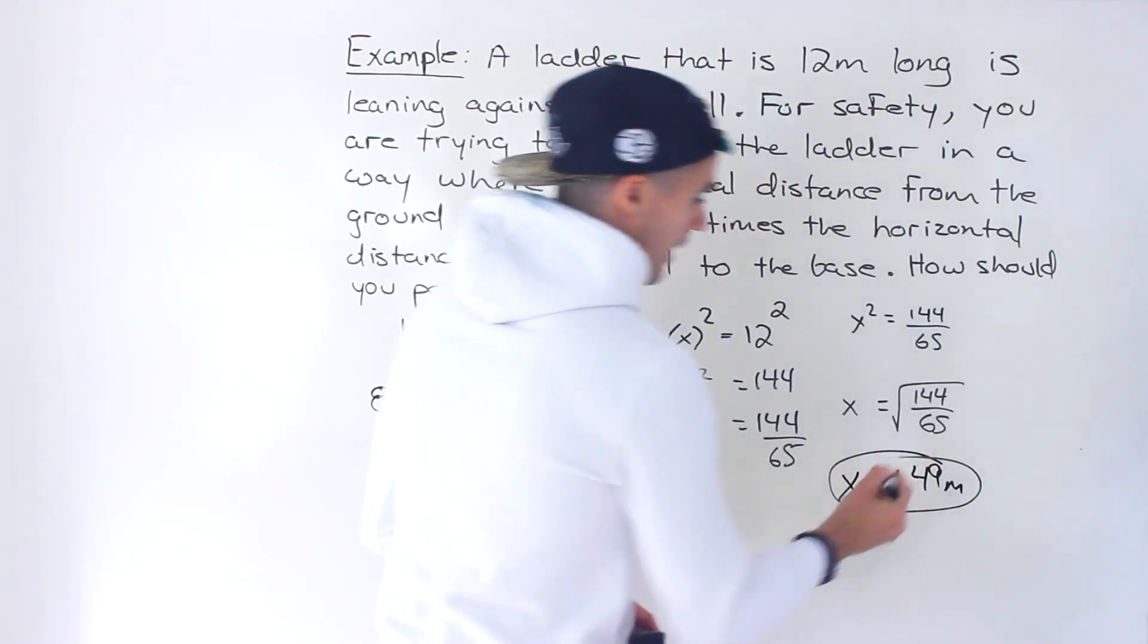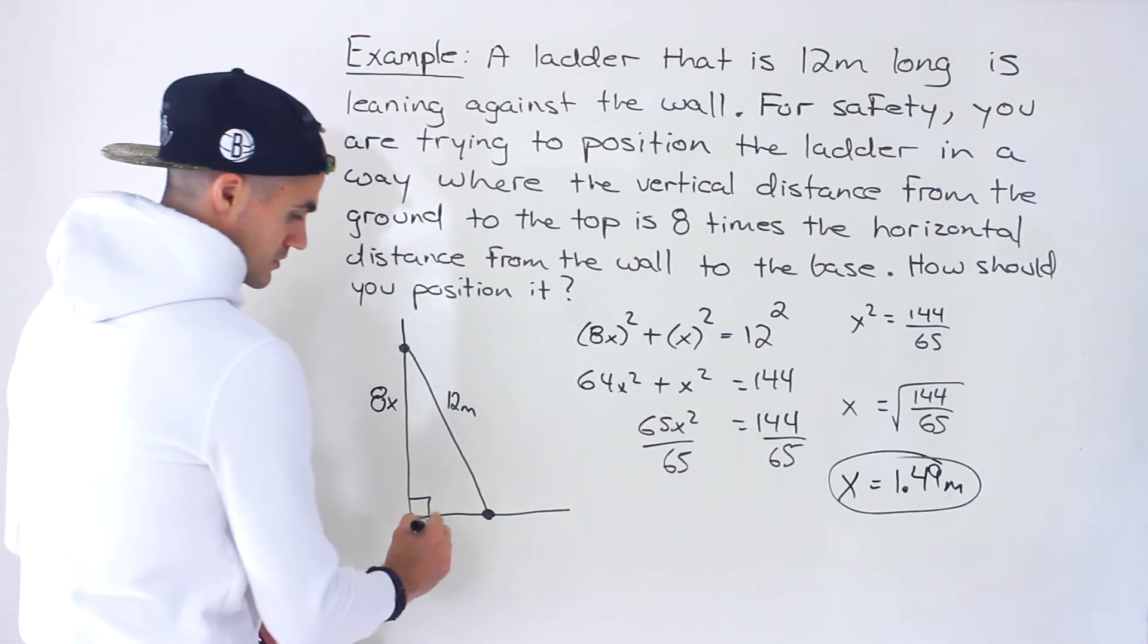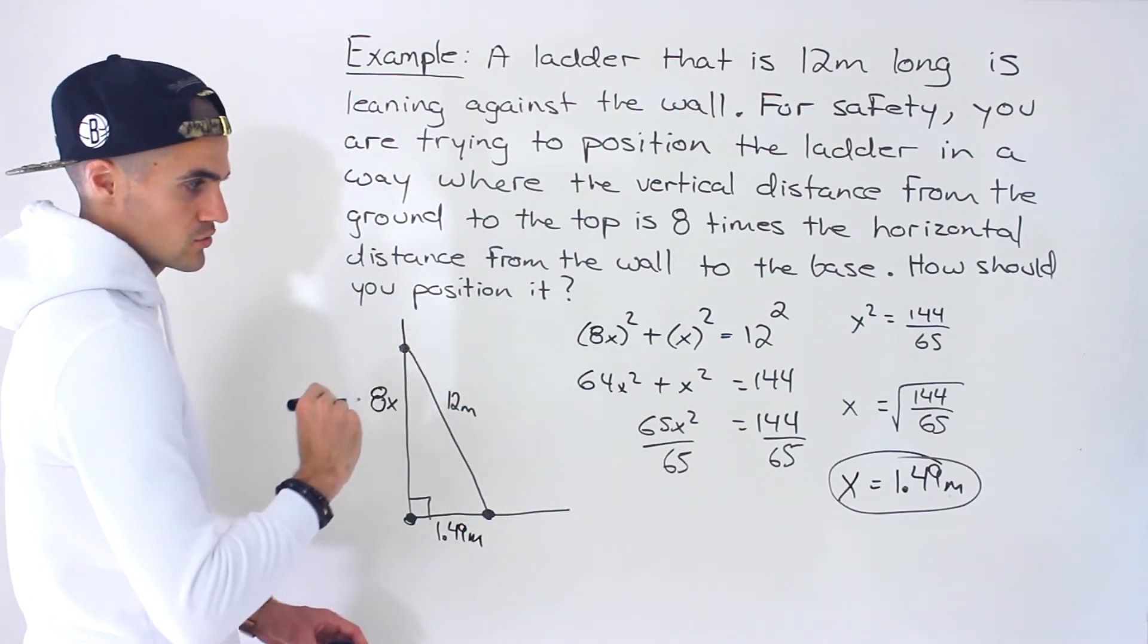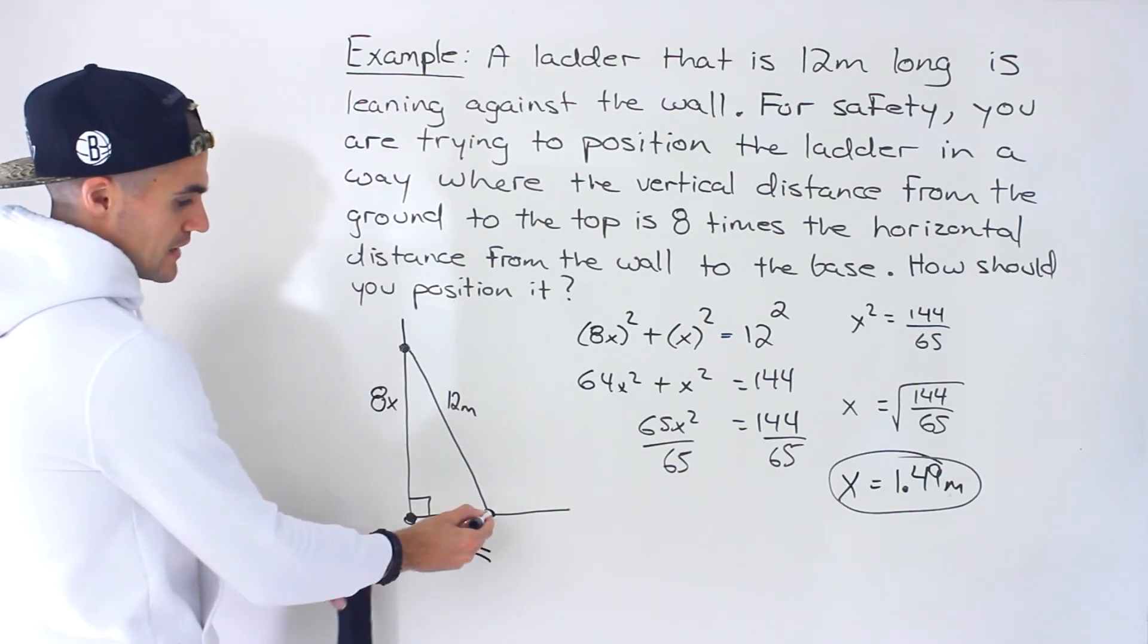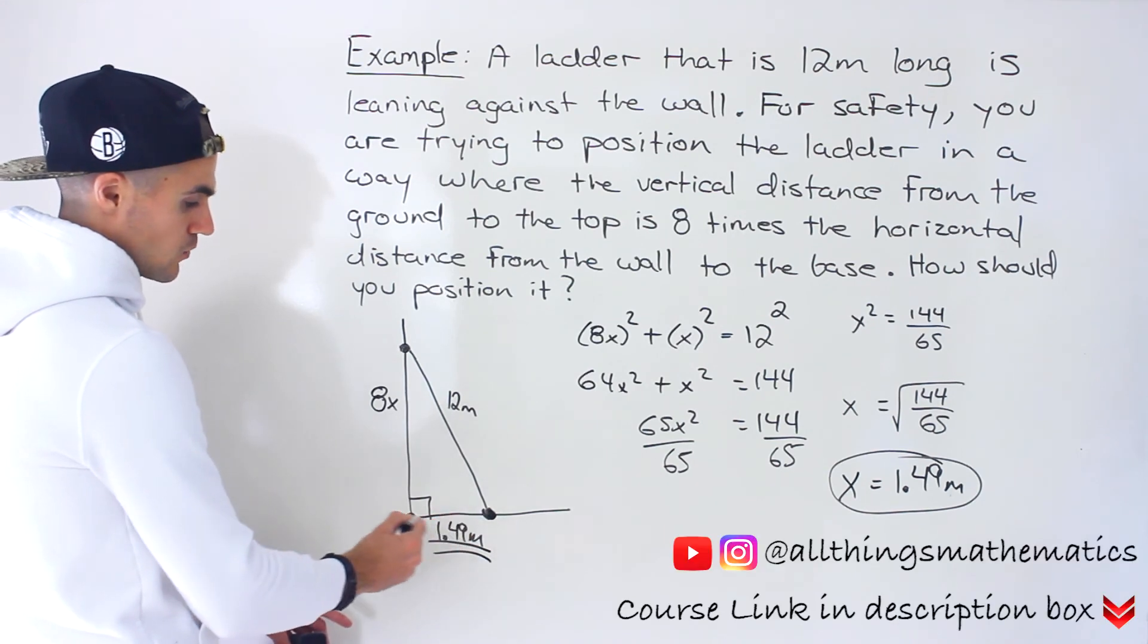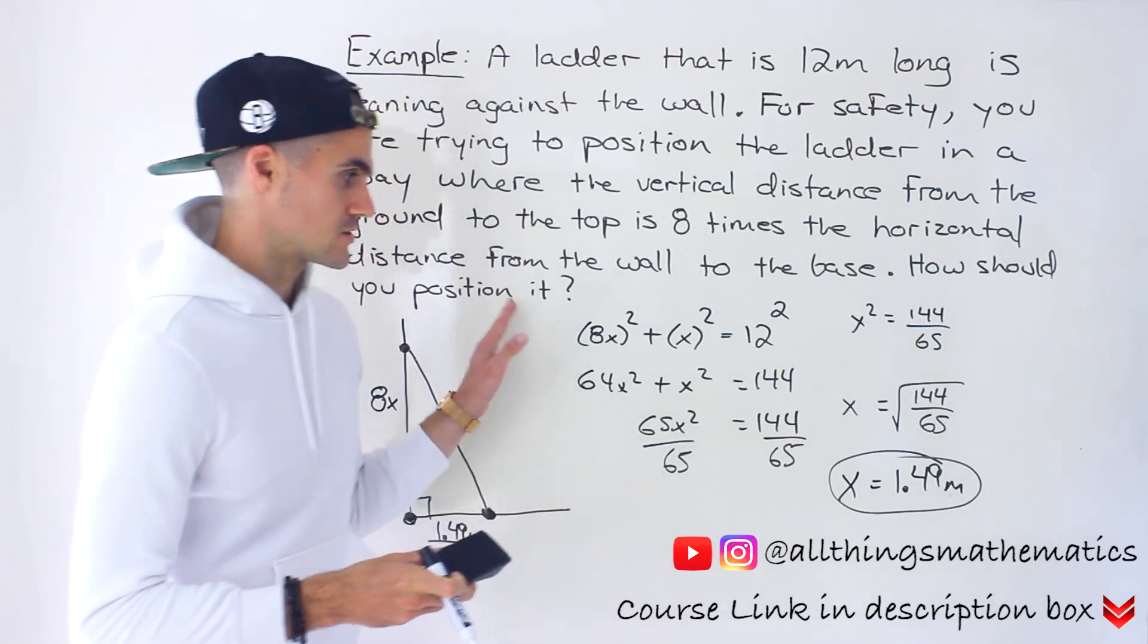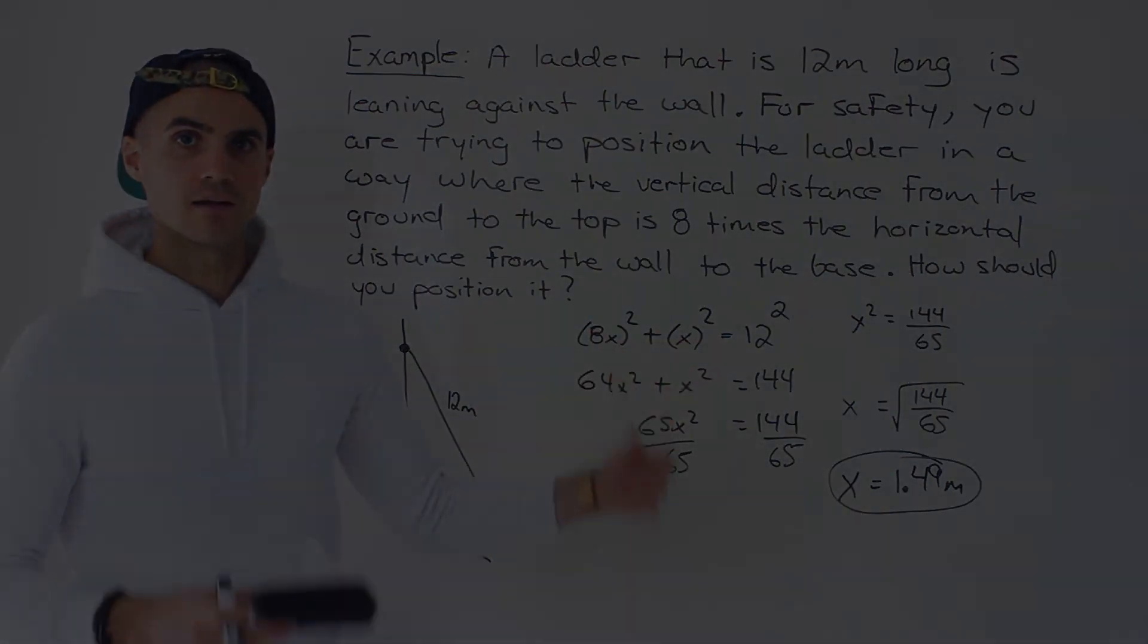That would be the horizontal distance right here, so that's how we should position the ladder. If you want the vertical distance you could take that value multiplied by 8. Just mentioning that the base of the ladder should be positioned 1.49 meters away from the base of the wall is good enough to answer this question. All right, so we took our quadratic equation and solved.